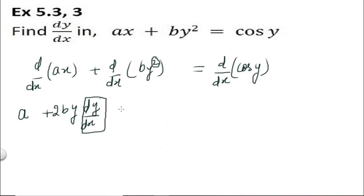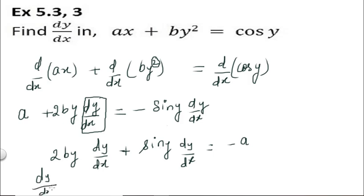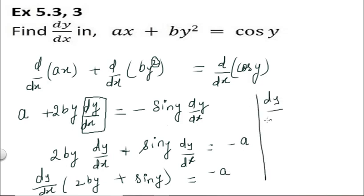d/dx of cos y — as you know, the differentiation would be minus sin y. Now we have done for the cos function; now we will differentiate y as well, giving dy/dx. Both sides have terms of dy/dx, so let us combine them. You get 2by·dy/dx + sin y·dy/dx = −a. Taking dy/dx common: dy/dx(2by + sin y) = −a, so dy/dx = −a / (2by + sin y).